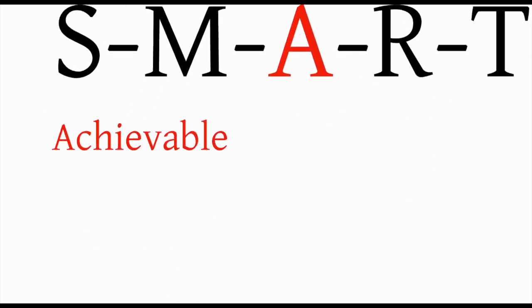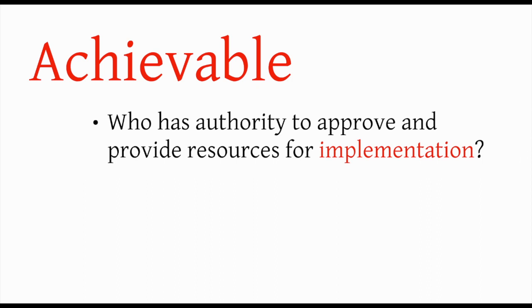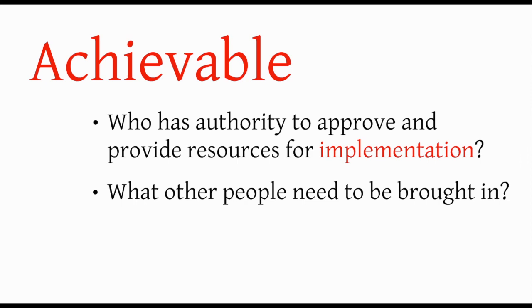The A stands for Achievable. Here is where you start to think about what resources will make the improvements, what support is needed, and what barriers need to be removed. You might ask yourself, who has authority to approve this project and provide resources for implementation? What other people need to be part of the team for a solution to be successful?